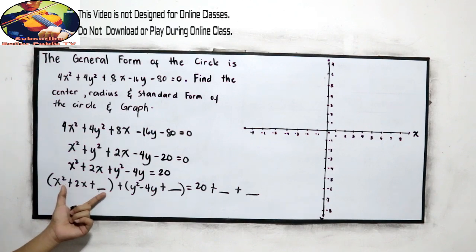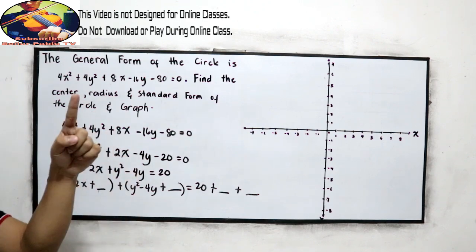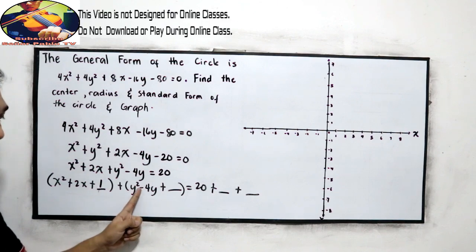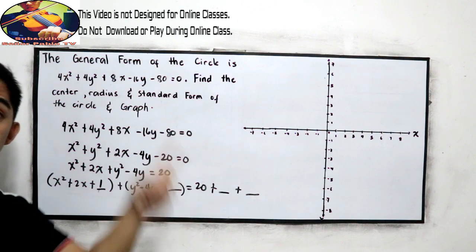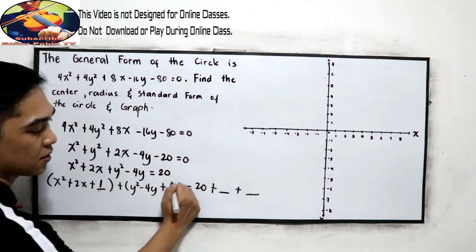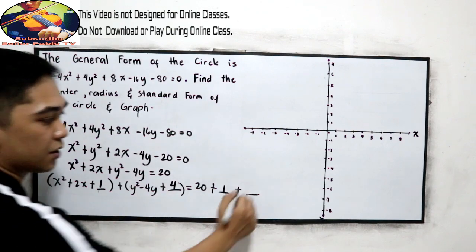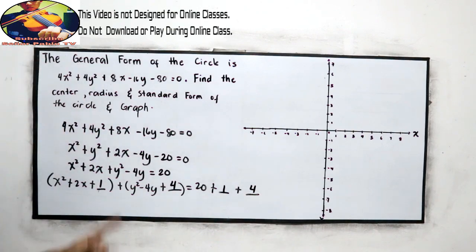Make it a perfect square trinomial. Middle term is 2, so 2 divided by 2, that is 1. 1 squared, positive 1. Next, negative 4 divided by 2, that is 2. 2 squared, positive 4. We added 1, so add 1. Adding 4, add 4.